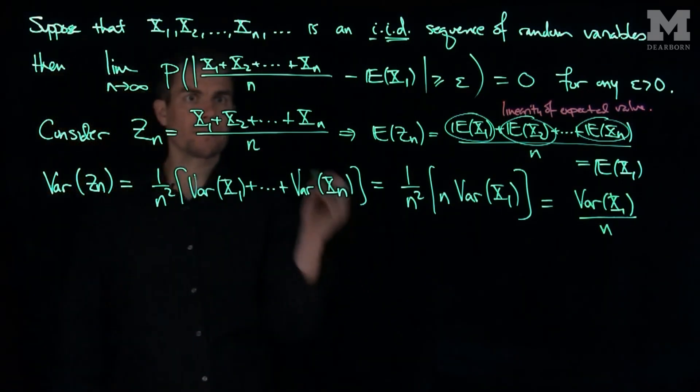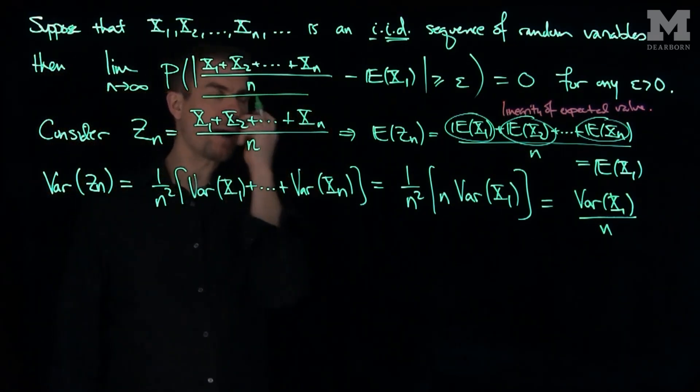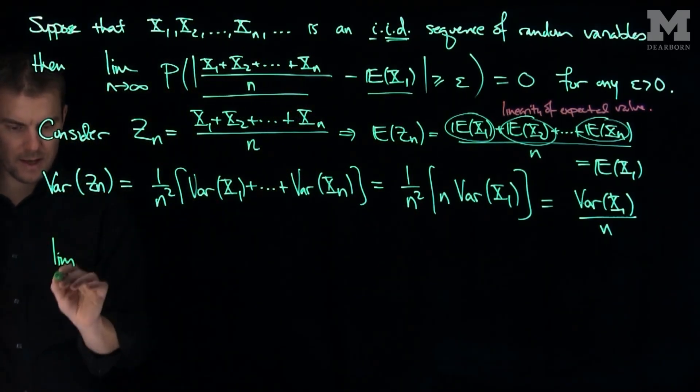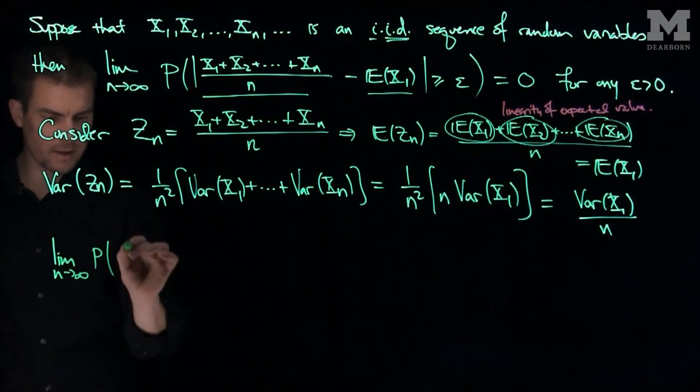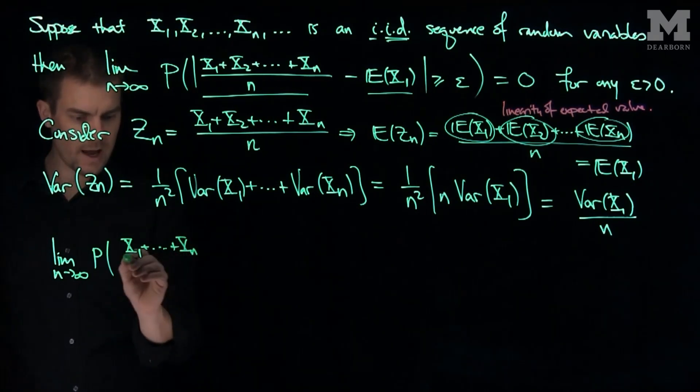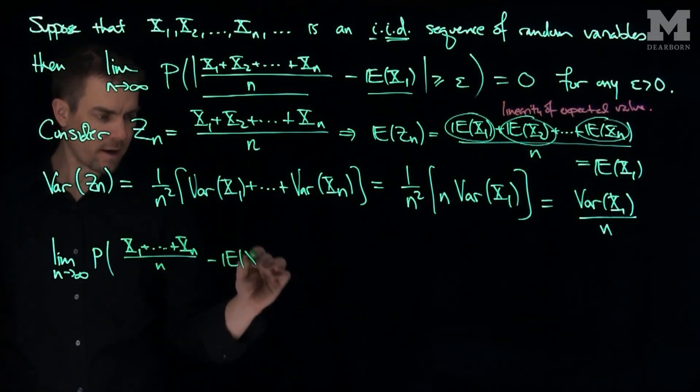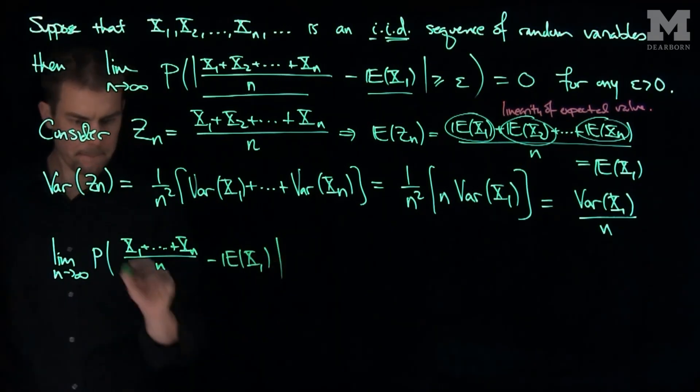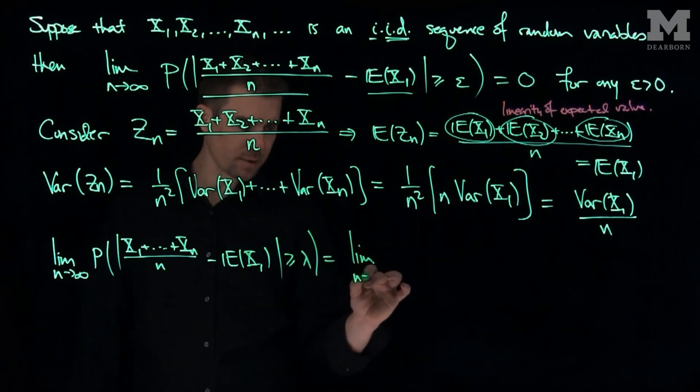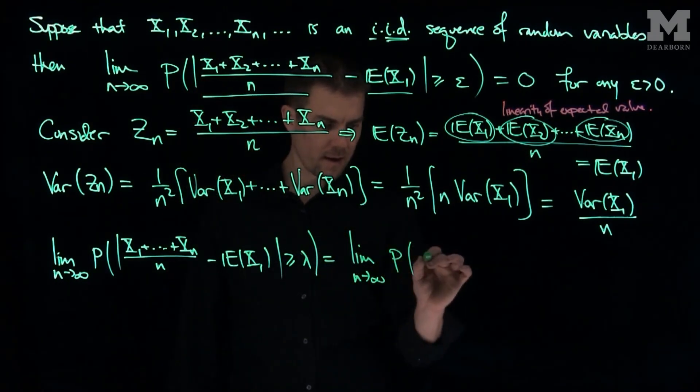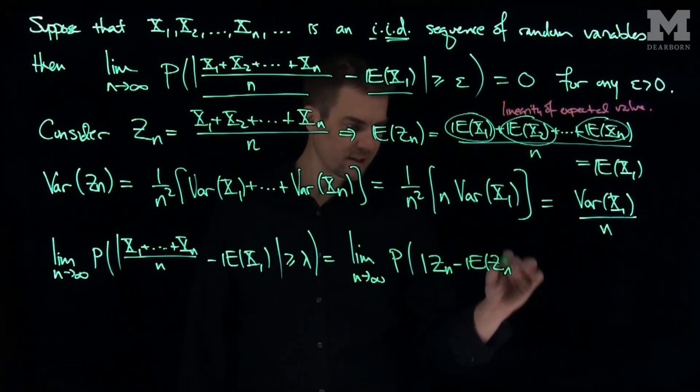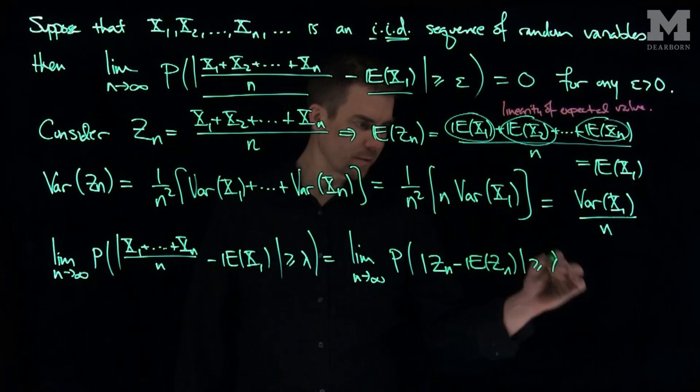And so now what we can do is we see that this is my random variable zn, and this is the expected value of zn. So I can write this, the limit as n goes to infinity of the probability that x1 plus xn over n minus the expected value of x1, bigger than or equal to lambda, is the same thing as the limit as n goes to infinity of the probability that the absolute value of zn minus the expected value of zn is bigger than or equal to lambda.